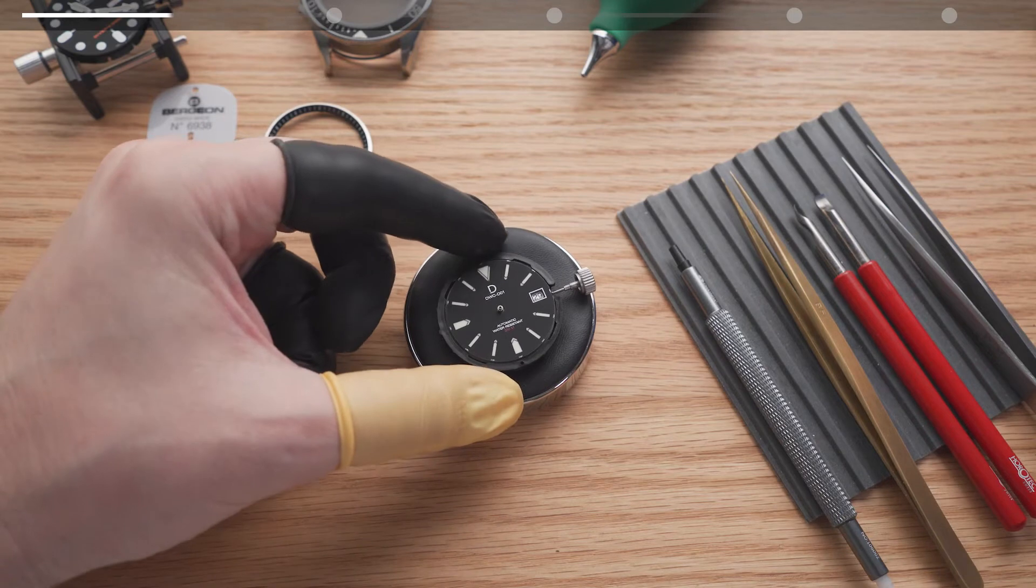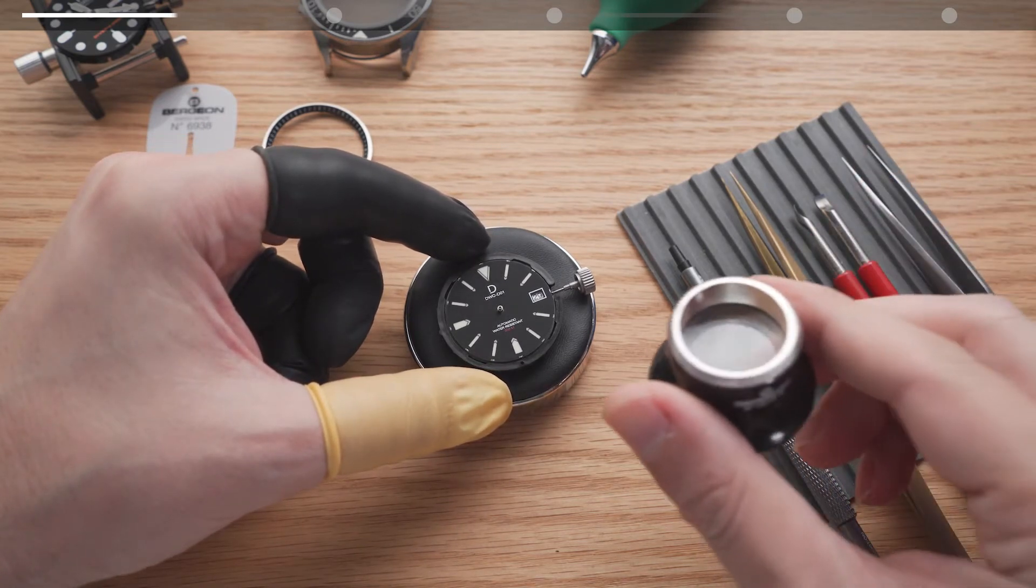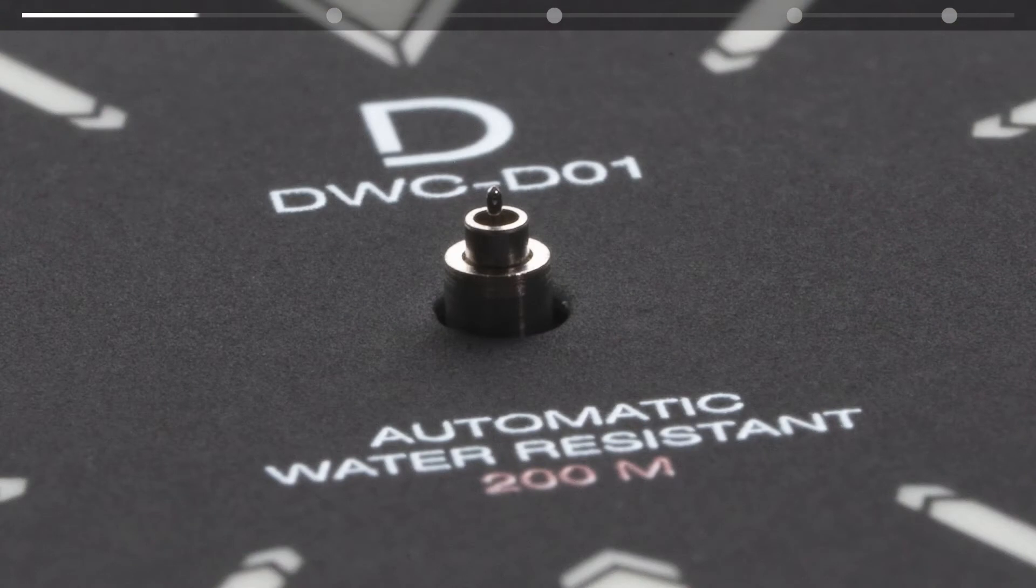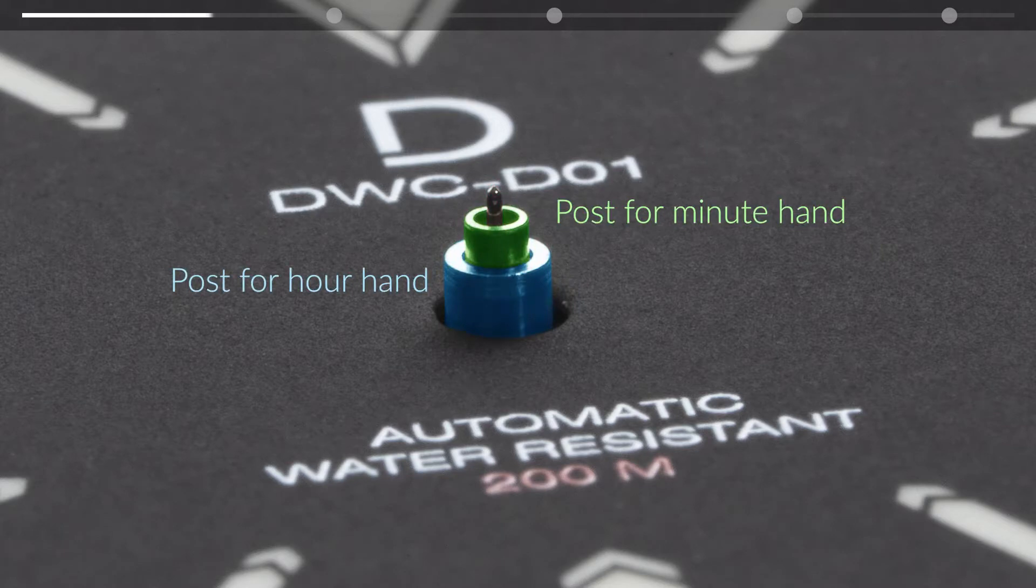Before we start I recommend taking a good look at the movement using a loupe if you have one. Be aware of how small and delicate the smallest post is and be careful not to bend it during the hand installation process. This is where you'll install your sweeping second hand after the hour and minute hands are set.